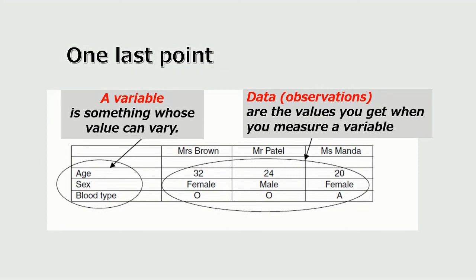One last point before we end: the definition of a variable. It is something whose value can vary, like the age, the sex, the blood group. On the other hand, data or observations are the values you get when you measure a variable.